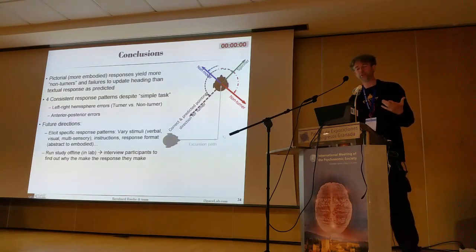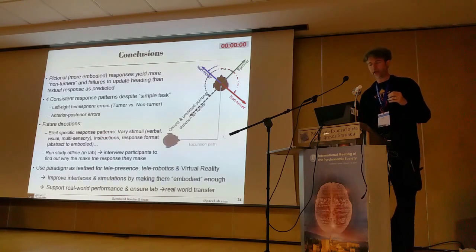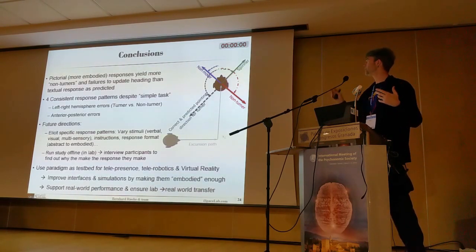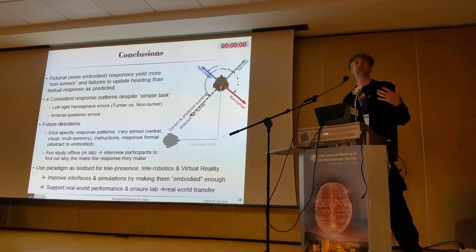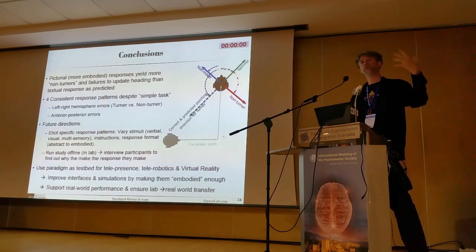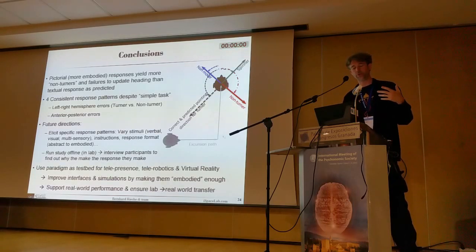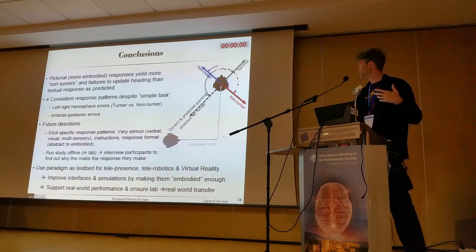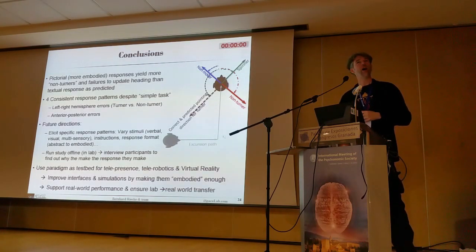Where we want to go with this is to use these tasks to see if we can elicit specific response patterns by varying stimuli — switching from verbal to visual to virtual reality — and multi-sensory conditions, until we find something that replicates a uniformly high turner performance. We're also running parallel in-lab studies alongside online studies. From an applied perspective, we'd like to use these simple paradigms as a test bed for improving virtual reality and telepresence interfaces — like drone piloting, remote robotics, video conferencing — where we really want people to have an embodied sense of where they are. If we get there, our results should also transfer from the lab into the real world. Thank you.